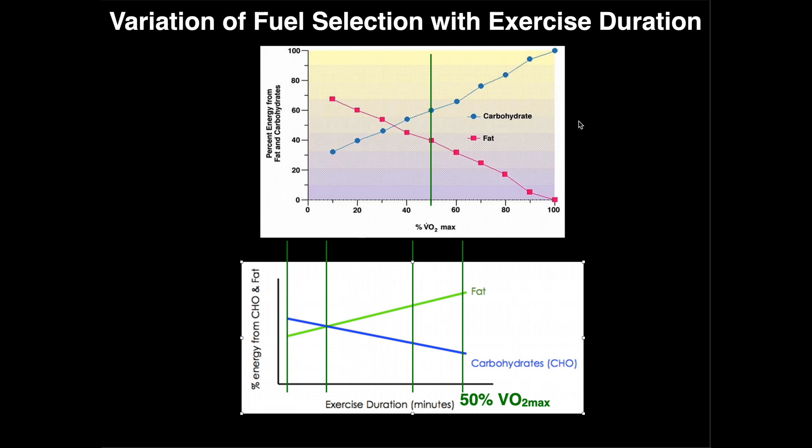If we can somehow manage to exercise at that intensity for a prolonged period of time, we will always see this trend. So for example, if we exercise at 20% of VO2 max, we may still start off with increased reliance on fat, but as we prolong that exercise we'll see even more reliance on fat.